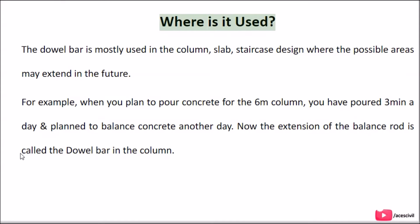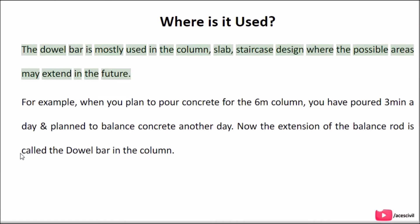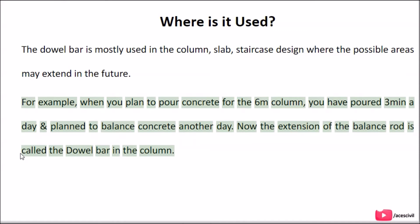Where is it used? The dowel bar is mostly used in the column, slab, and staircase design where the possible areas may extend in the future. For example, when you plan to pour concrete for a 6-meter column, you may pour 3 meters one day and plan to pour the balance another day. The extension of the balance rod is called the dowel bar in the column.